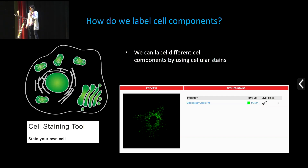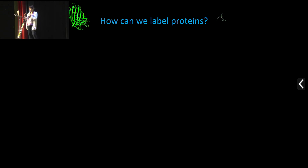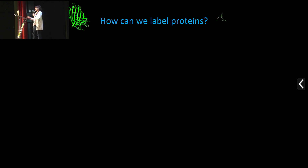You can even get a preview of how these cells will look when labeled with these dyes. And as already mentioned, you will also be able to make some of these dyes which can target mitochondria. But how can we label proteins? Let's say you are interested in a specific protein in a cell — how do we do that? By now you've realized we have kind of two options, as speakers were talking either about fluorescent proteins or organic dyes.